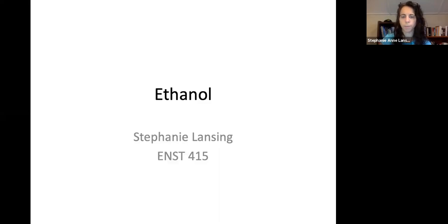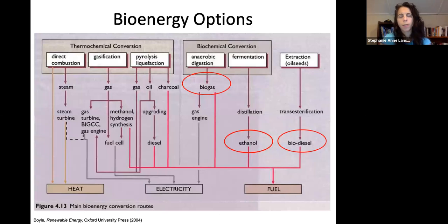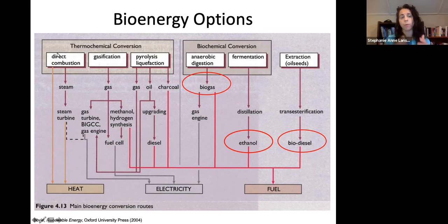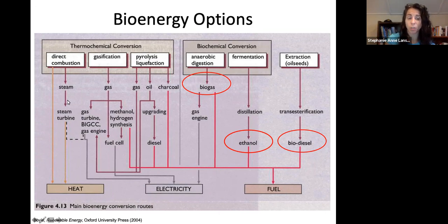Welcome to ethanol production. We're entering the biofuels section. To be clear about biofuels: you can have thermochemical conversion where you just combust biomass, which goes through our traditional steam to turbine to heat or electricity.